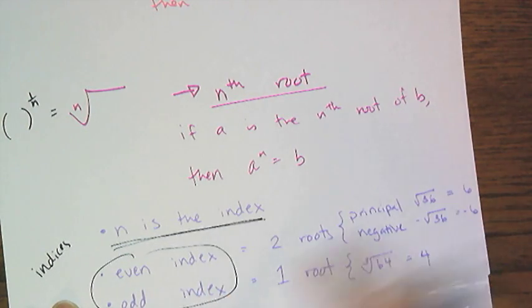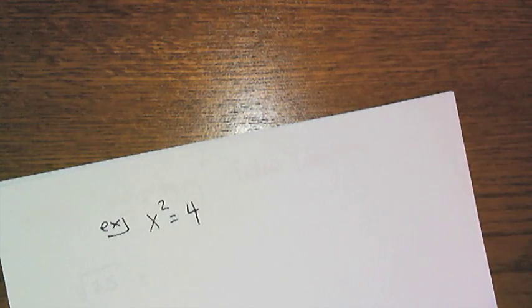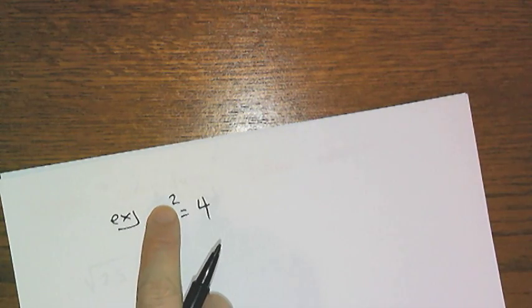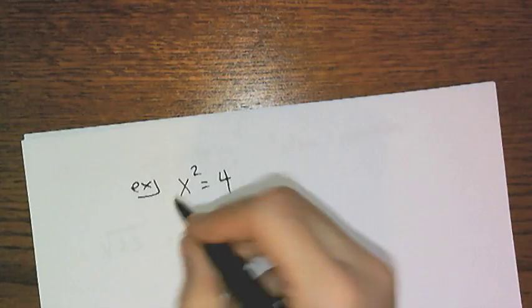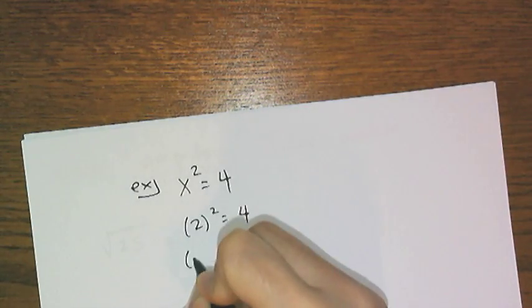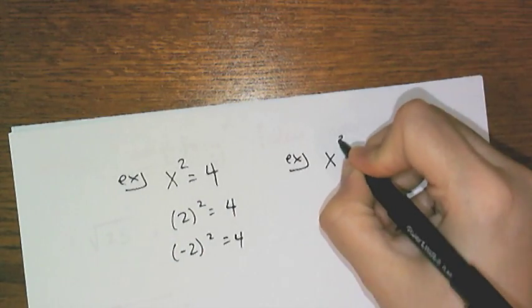Now we're going to get to equation solving a little bit later, but let me give you a little preview. So if I have some equation that says x squared equals 4, the fact that that is a squared tells me that there are two numbers that are going to work here, positive 2 and negative 2.